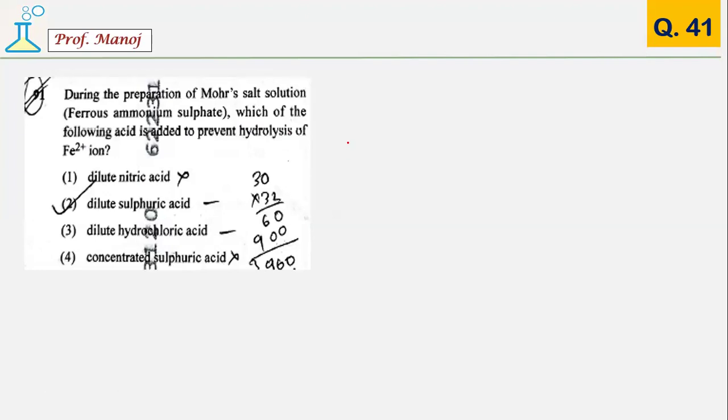This is from practical chemistry. Mohr salt preparation: when you do ferrous ammonium sulfate, the ferrous sulfate, Fe plus 2 salt, might undergo hydrolysis. To prevent that, they add dilute sulfuric acid, about half a test tube, that prevents hydrolysis of ferrous ions.